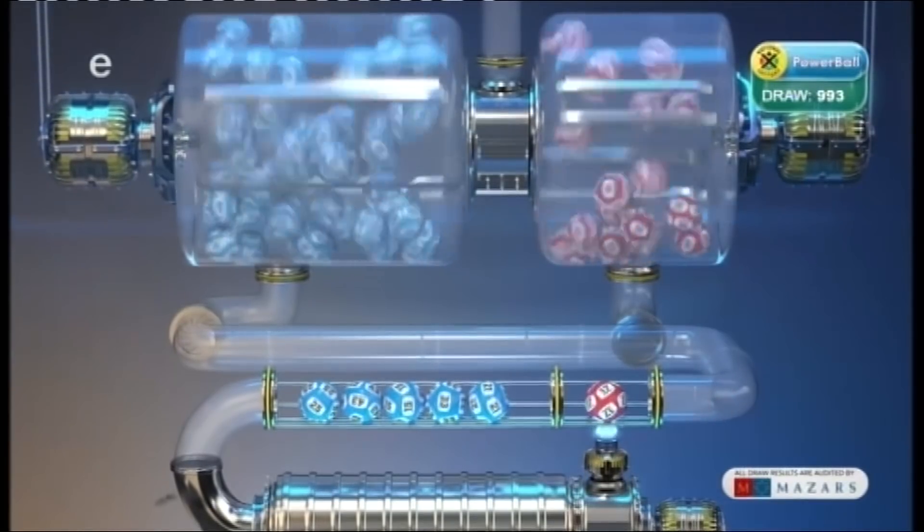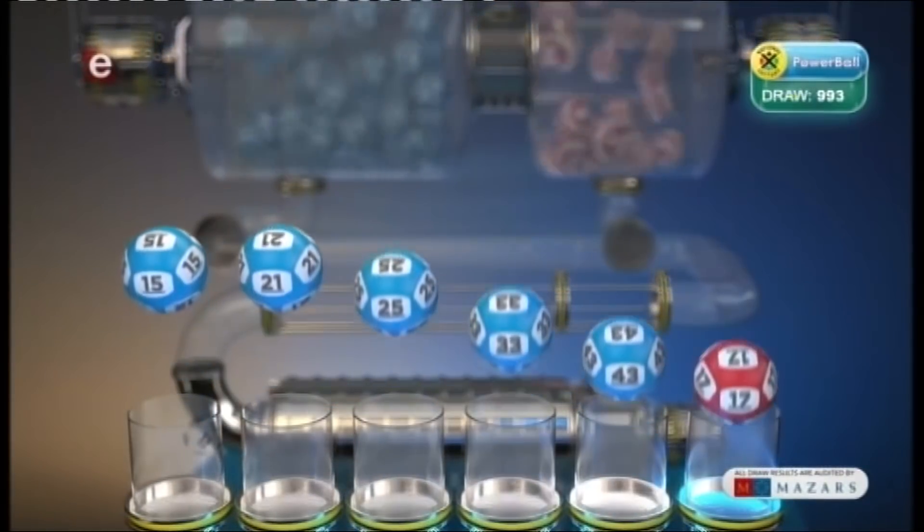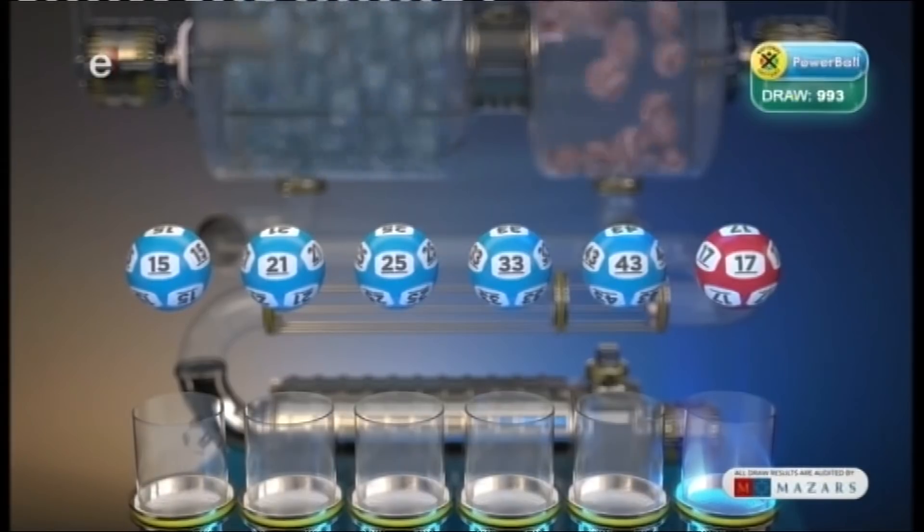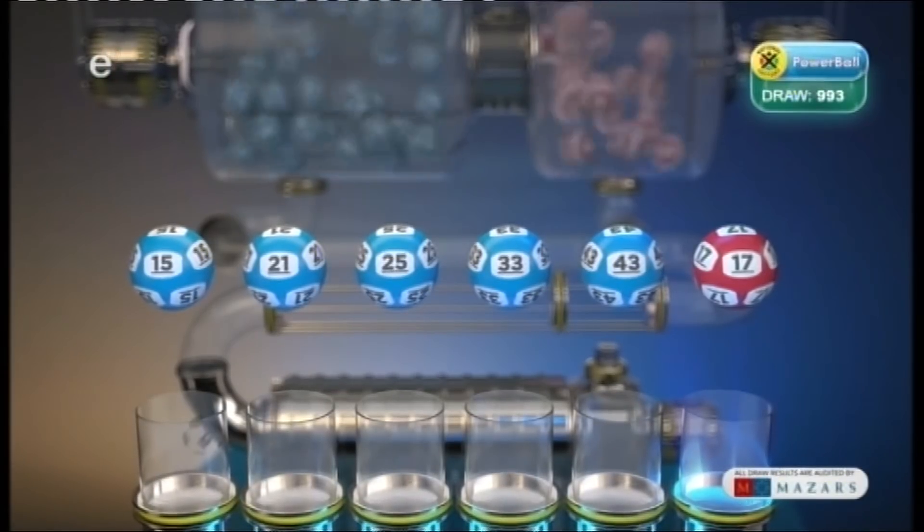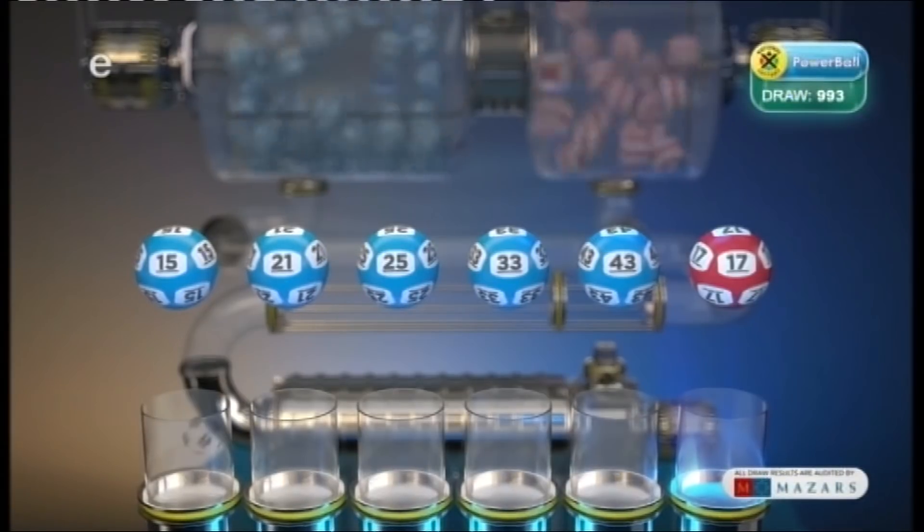And the Powerball is 17. Let's recap these numbers in numerical order: 15, 21, 25, 33, 43, and the Powerball is 17.